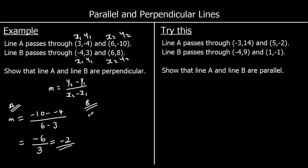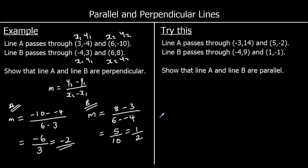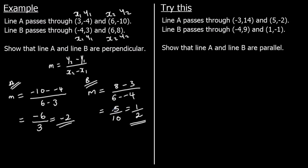For line B: y2 minus y1 is eight minus three, over x2 minus x1 is six minus negative four. That gives five over ten, which is one half. The two gradients are negative two and one half. They are perpendicular because they multiply to make negative one, or because one is the negative reciprocal of the other.